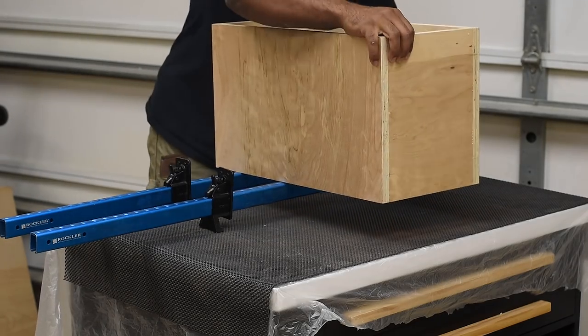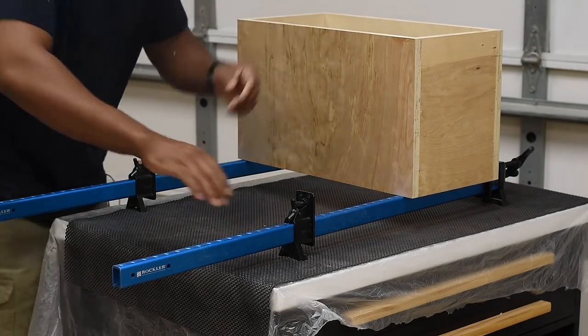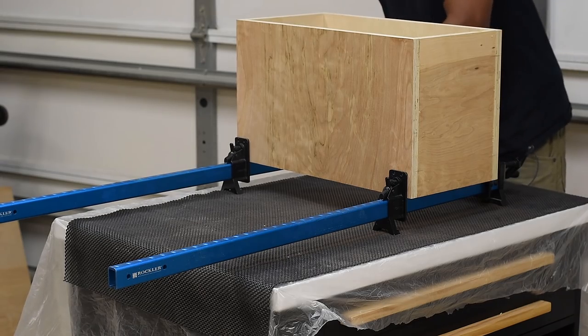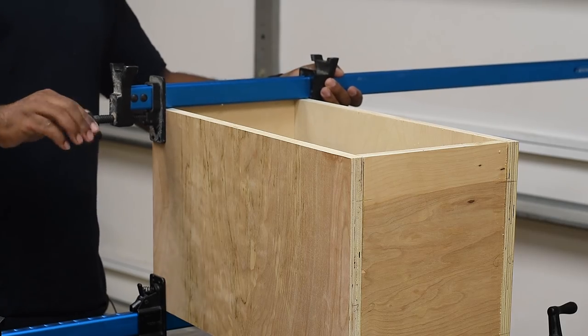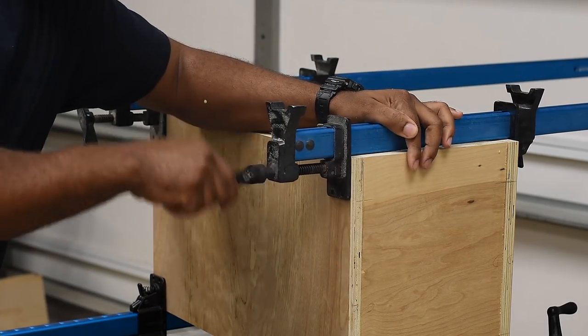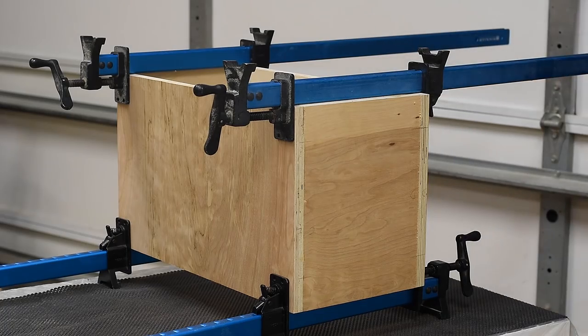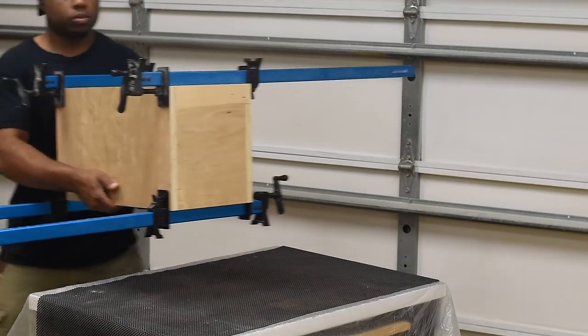With all the sides glued up, it's time to clamp this thing down. Four clamps is pretty much all you need per box. Two on each side and you can use band clamps if you have access to some of those. I do recommend clamping because you want to make sure that the box keeps its form and stays squared till the glue dries.